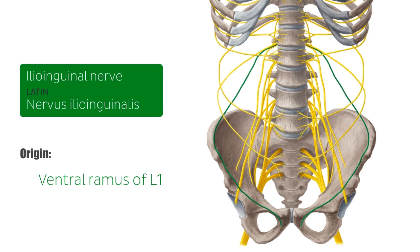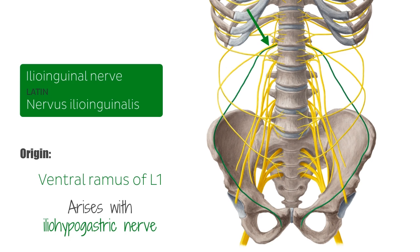The ilioinguinal nerve arises with the iliohypogastric nerve as a single trunk from the L1 nerve root. This short common trunk enters the abdomen posterior to the medial arcuate ligament and runs parallel and superior to the iliac crest as it traverses along the anterior surface of the quadratus lumborum muscle.